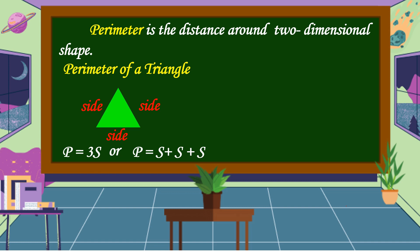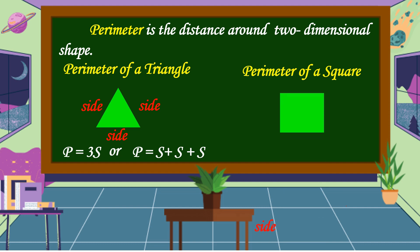Now let's proceed to the perimeter of a square. As we all know, a square has four equal sides. So the formula for finding the perimeter of a square is P = 4s, or perimeter equals 4 times the side.